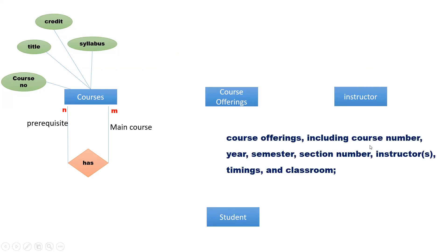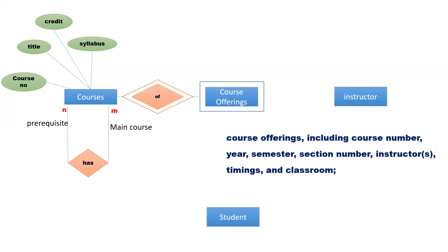Course offerings include course number, year, semester, session number, instructors, timing and classroom. Here, the course number is the attribute of the entity course. So that means this course offering is a weak entity that is dependent on the strong entity course. So we can have a weak relationship. A single course can have many course offerings but a course offering is of a particular course, so that means here it is one-to-many cardinality.